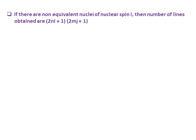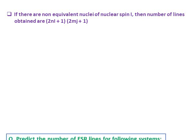If there are non-equivalent nuclei, the number of ESR lines is given by (2NI+1)×(2MJ+1), where N and M are the numbers of each type of nucleus and I and J are their respective spin quantum numbers. When non-equivalent nuclei are present, the ESR spectrum becomes more complicated.